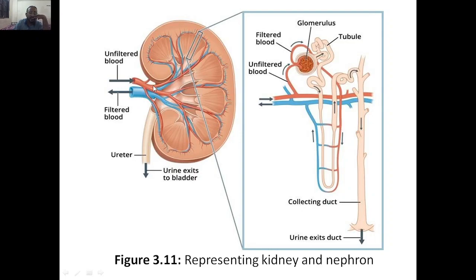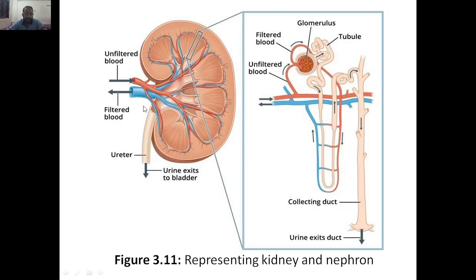Whatever filtered blood is there, it will go out. Unfiltered blood enters, it is purified, waste comes here. The blue capillaries — the tubules — show that the filtered blood moves to the other side. That was about the kidney and the architecture of kidney. Now we will discuss the architecture of the nephron.